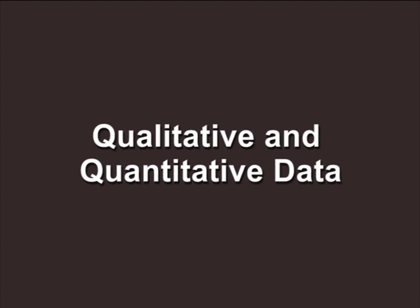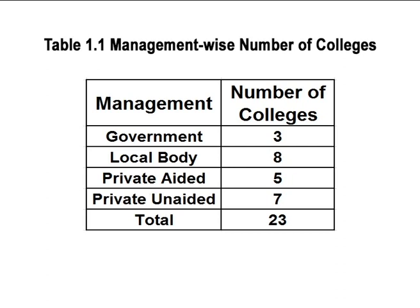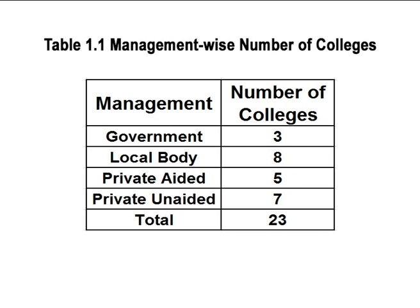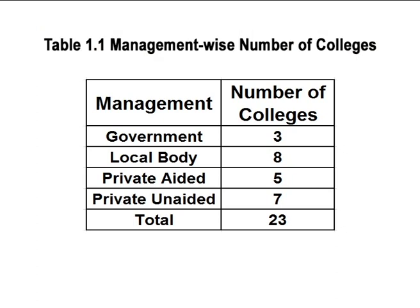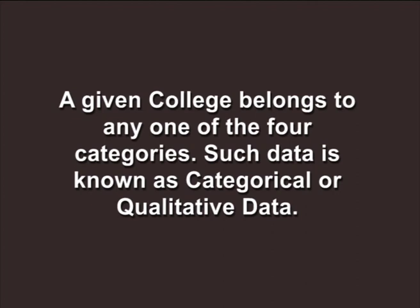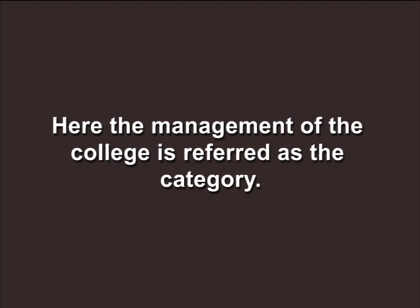Qualitative and quantitative data: consider a set of data consisting of the number of colleges according to management in your area, as given in Table 1.1. Table 1.1 depicts management-wise number of colleges. The colleges have been classified into four categories: government colleges, local body colleges, private aided colleges, and private unaided colleges. A given college belongs to any one of the four categories. Such data is known as categorical or qualitative data, where the management of the college is referred to as the category.